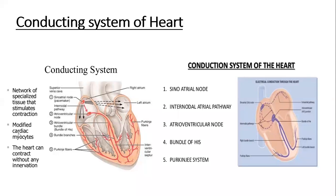These are modified cardiac muscle cells, modified to conduct impulses between the different parts of the heart, leading to contraction. This network of specialized tissue comprising modified cardiac myocytes consists of: the sinoatrial node (SA node), the atrioventricular node (AV node), the bundle of His (also called the AV bundle), and finally the Purkinje fibers.